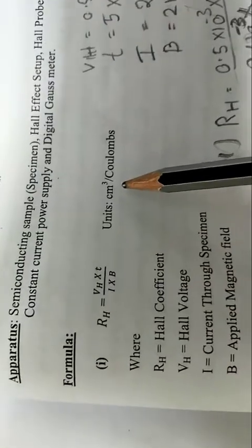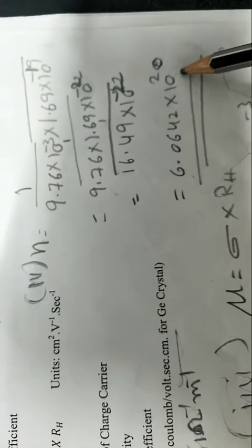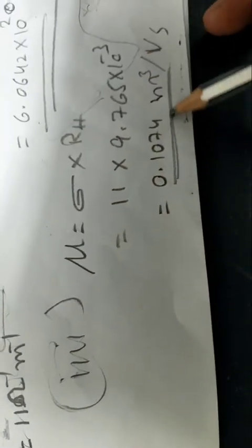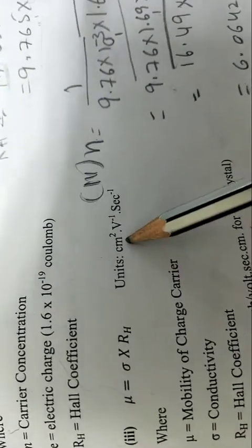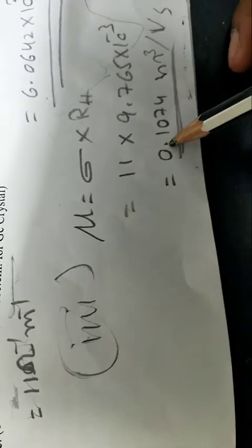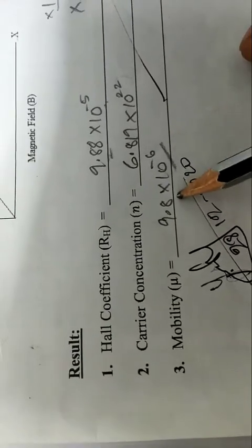Summary of results: RH ≈ 9.76×10⁻³ m³/C (unit difference: I used meter cube, student used centimeter cube). Carrier concentration n ≈ 10²⁰ m⁻³ (student got 10²² cm⁻³ — same value, different units). Mobility µ ≈ 0.1074 m²/(V·s). The answers are in the correct range. The student needs to correct the conductivity unit conversion to get consistent values.